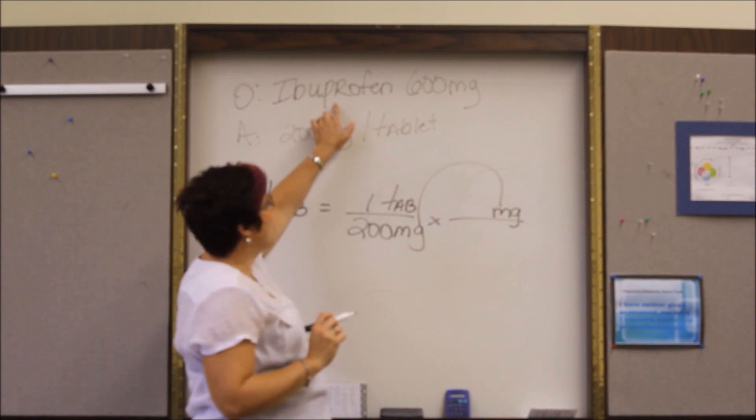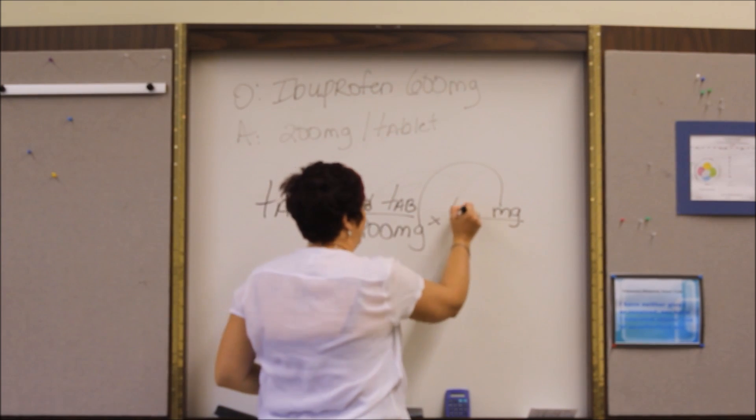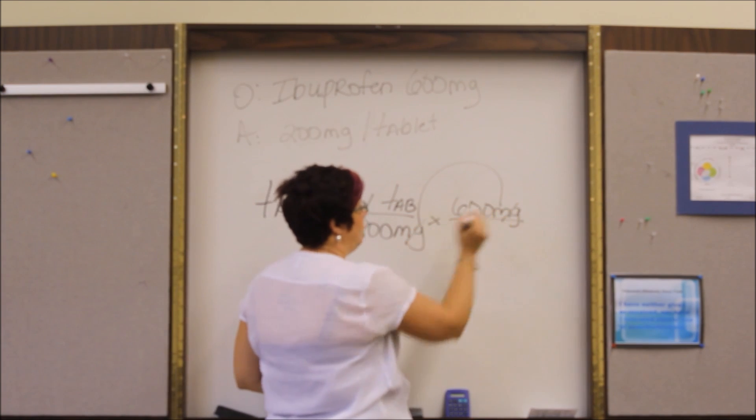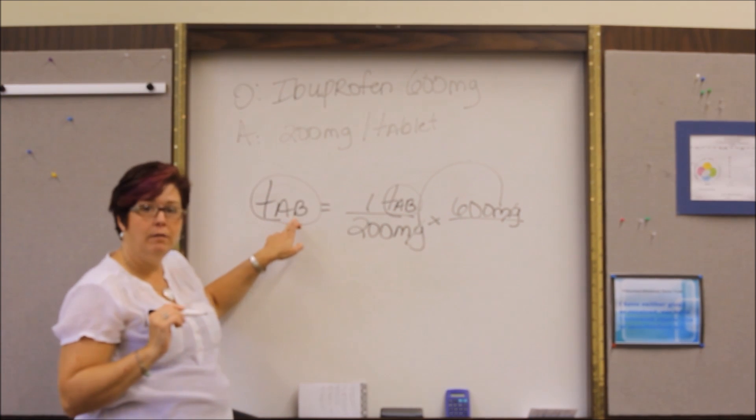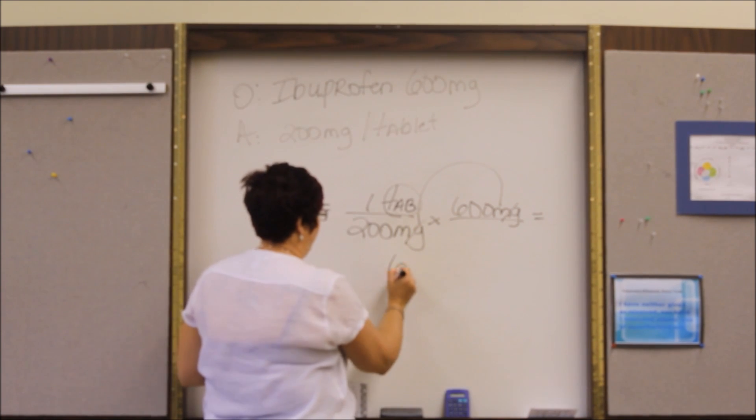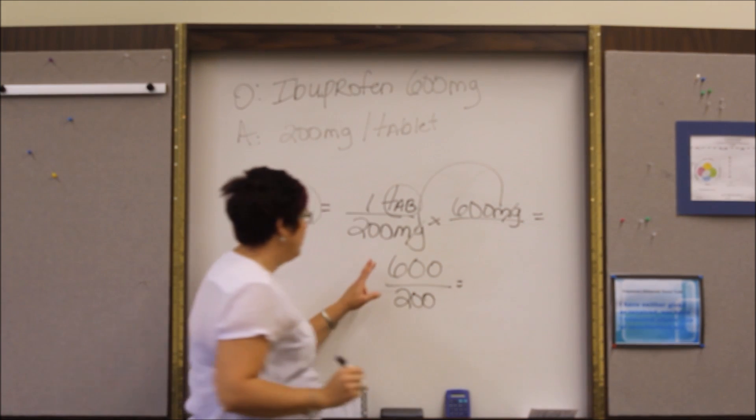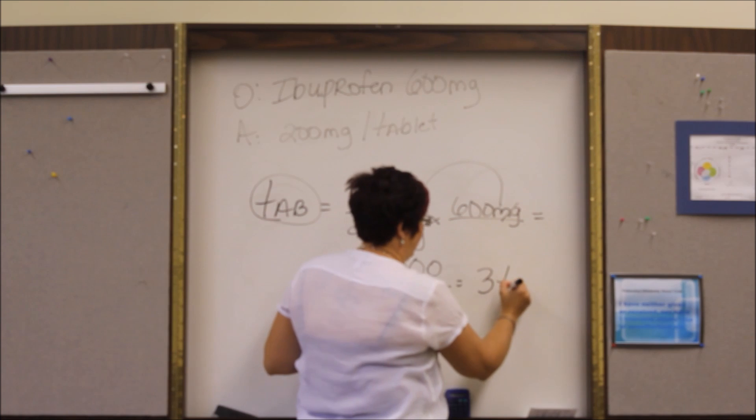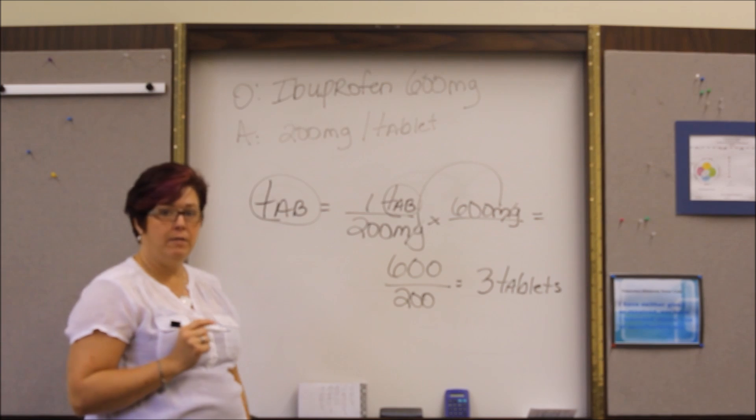Milligrams, milligrams go up to what our order is asking for and it's asking for 600 milligrams. Cancel out. Milligrams, milligrams. We're left with tabs. Tab is what our answer needs to be. So we're done. So 600 divided by 200 is 3. We're going to give 3 tablets. Now we're going to do one more problem.